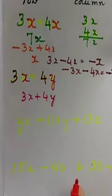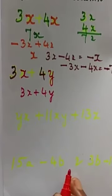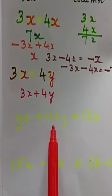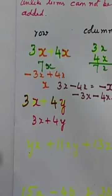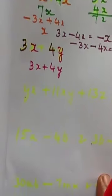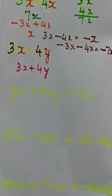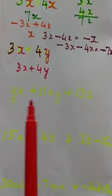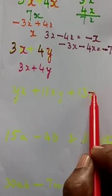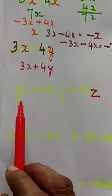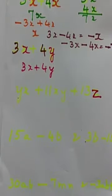Here they have given yx plus 11xy, 13z. You have to collect like terms. Here only z is unlike term. yx and xy are like terms.